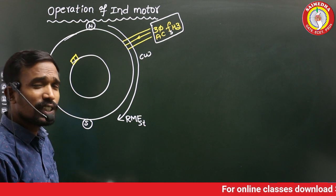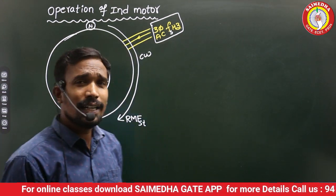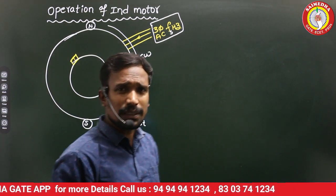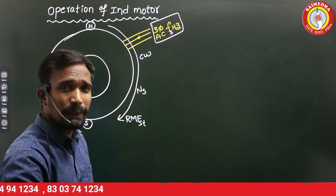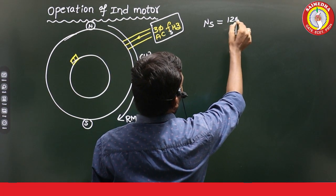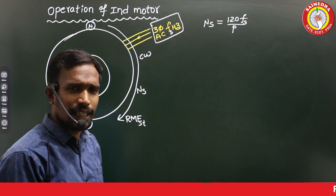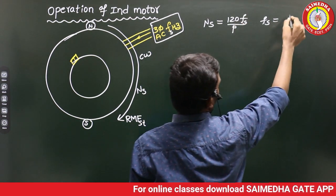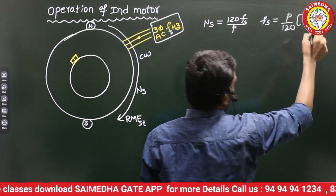When supply is given to the stator, the stator won't rotate — it is stationary. But in that stator, a magnetic field is created which rotates in the clockwise direction with some speed. That speed is called synchronous speed. The synchronous speed formula is: Ns = 120F / P, where F is the stator or supply frequency. To calculate supply frequency: Fs = (P / 120) × Ns.